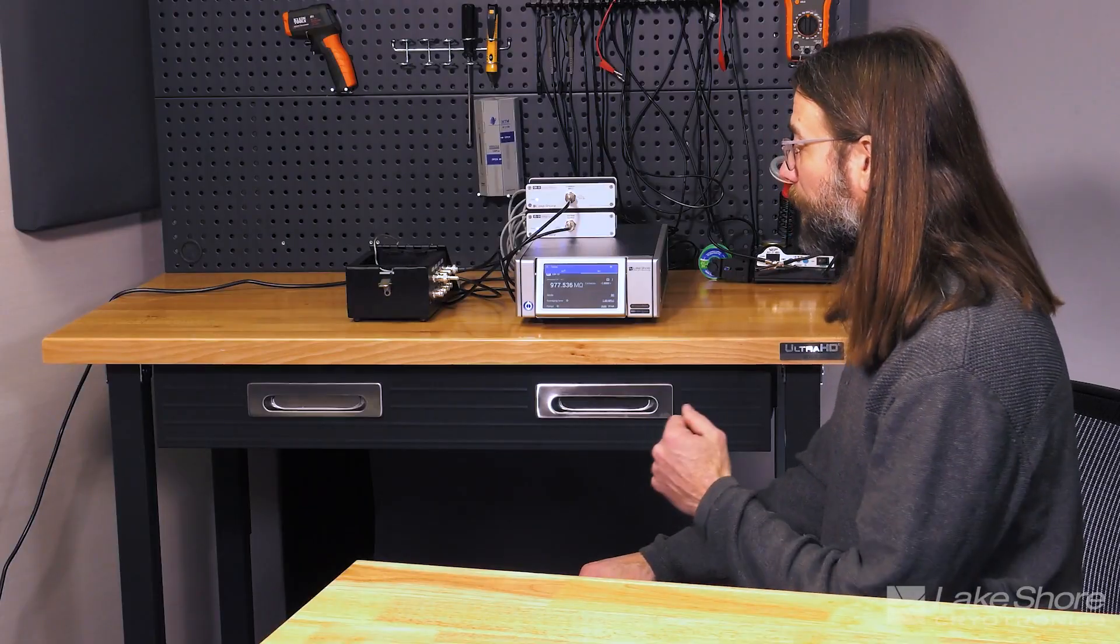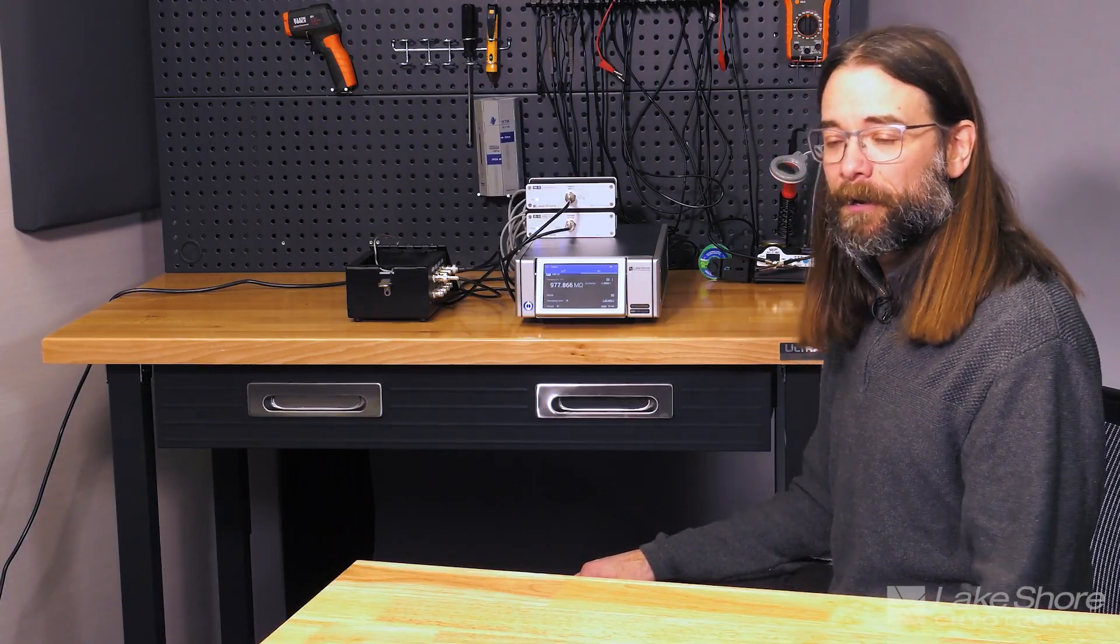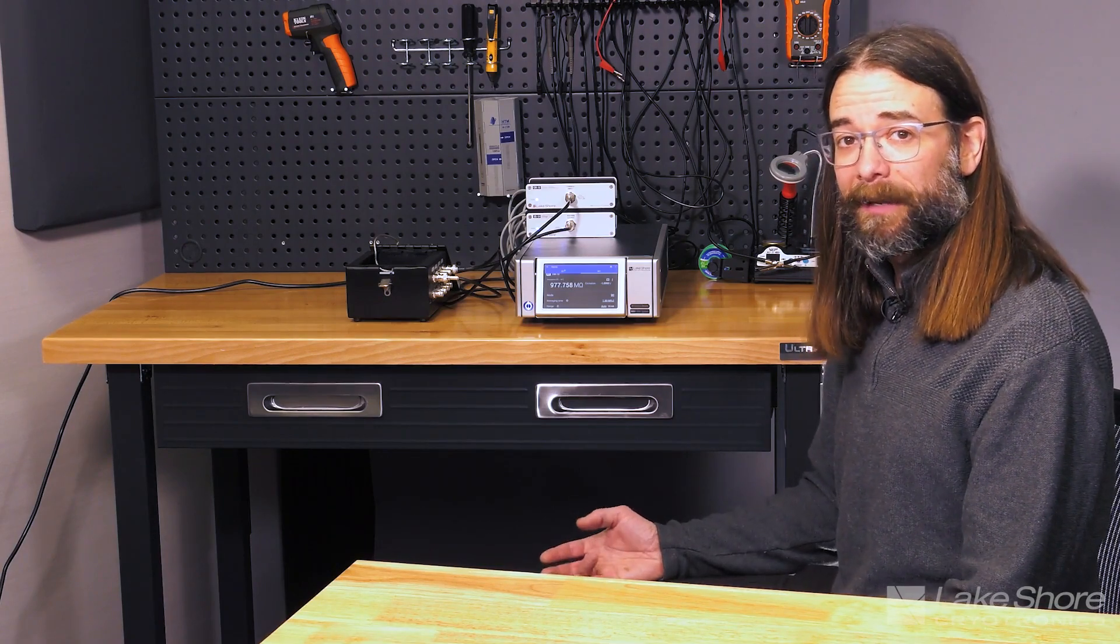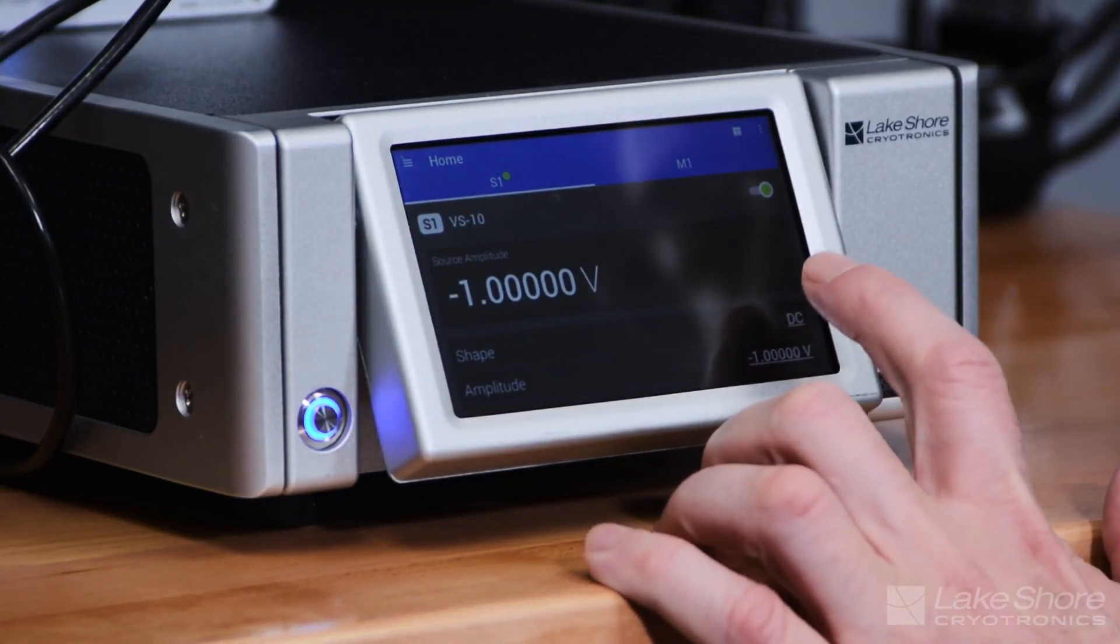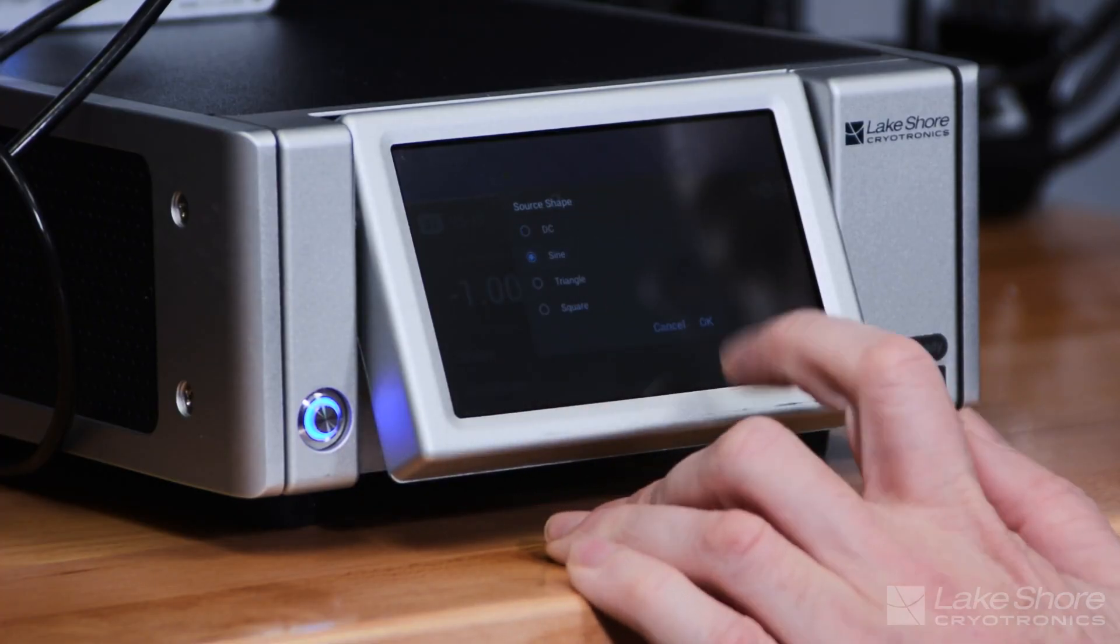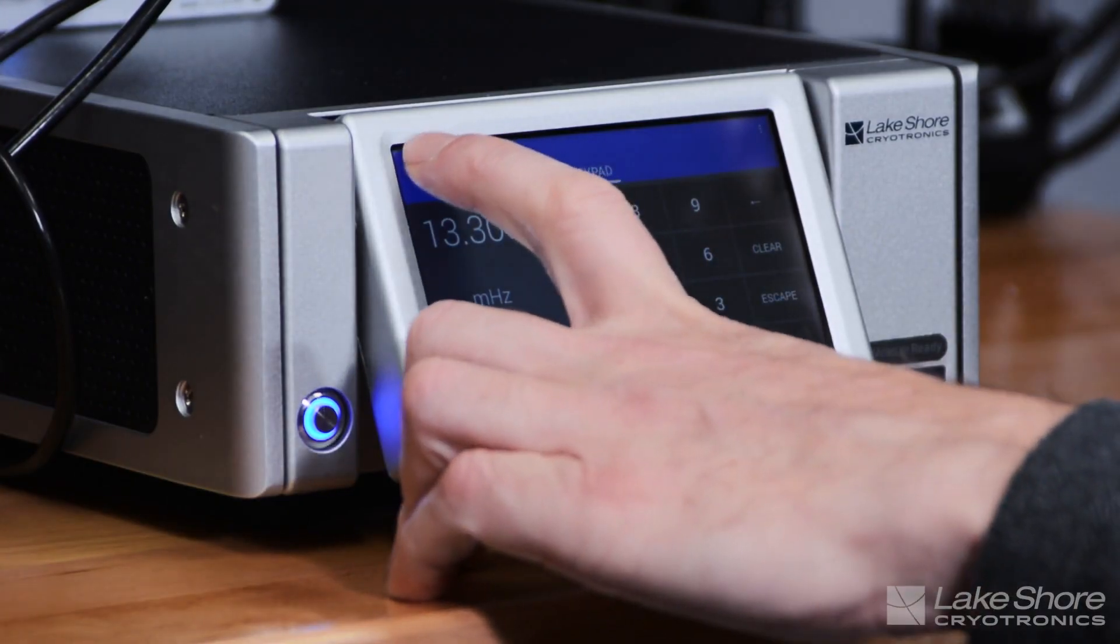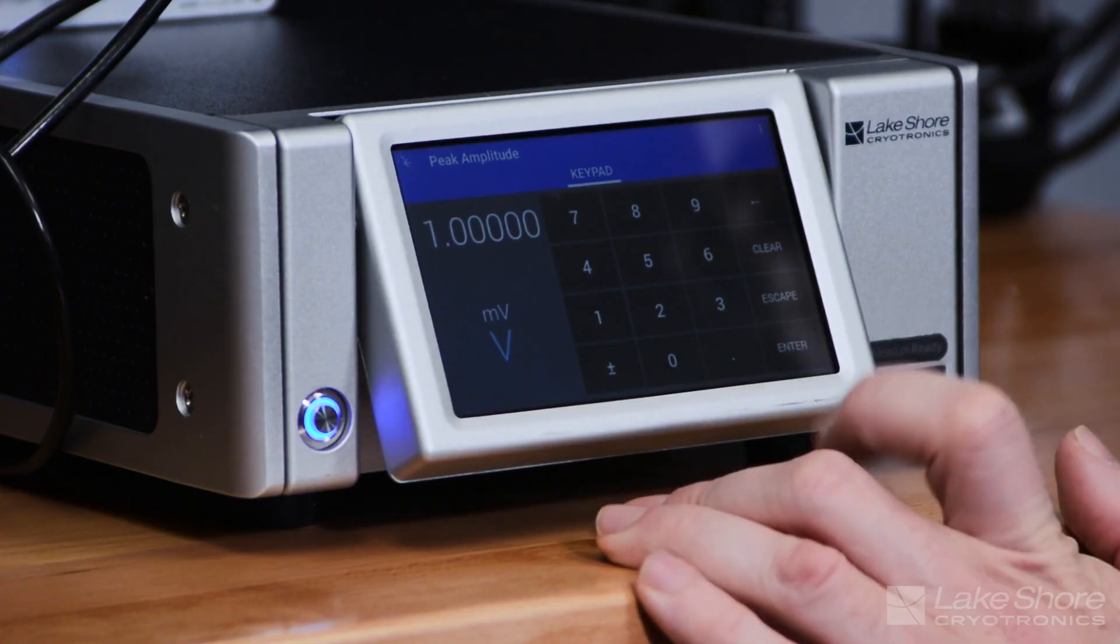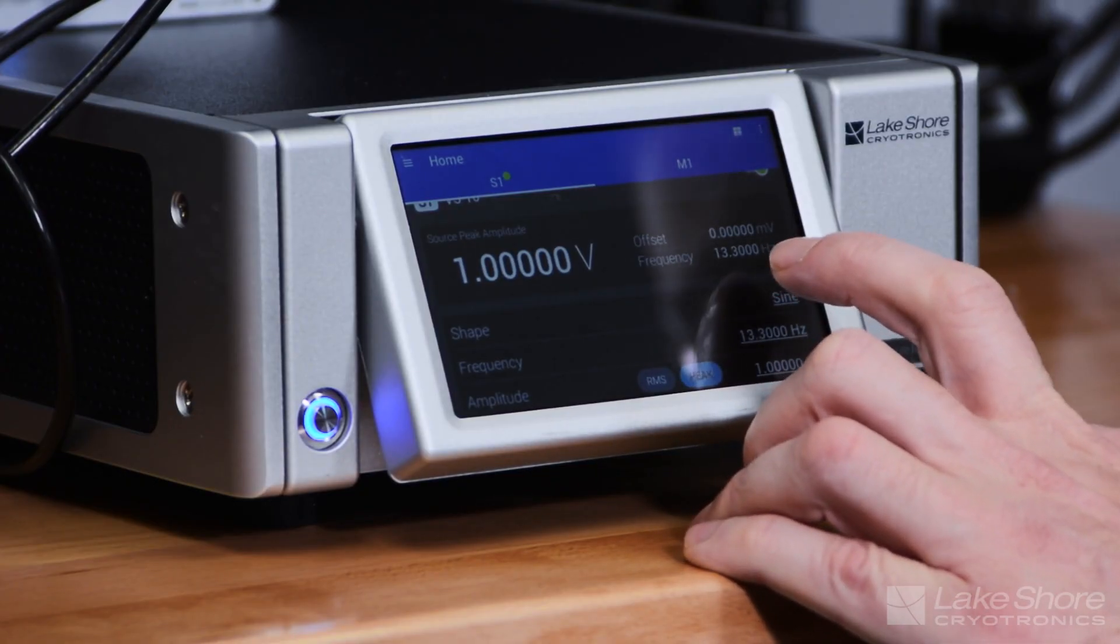So one technique that we have to getting rid of or not having as much influence or these offsets having as much influence over your measurement is using a lock-in technique or a lock-in amplifier technique. And in that way with the M81 we can really do this quite easily. We can go to shape and we can simply change this to sine and now I'm sourcing one volt of a sine wave at 13.3 hertz.